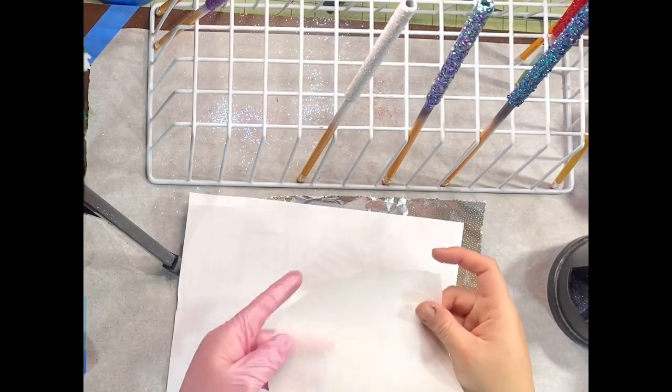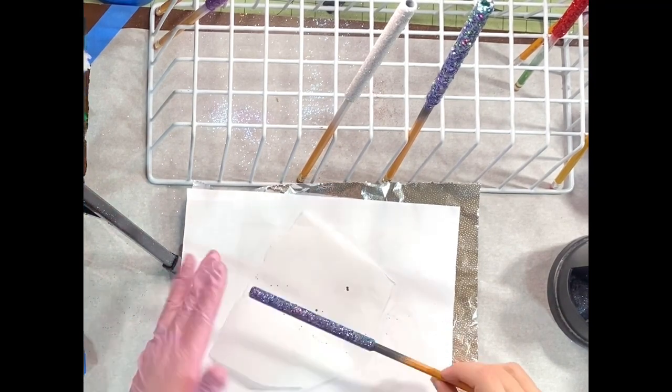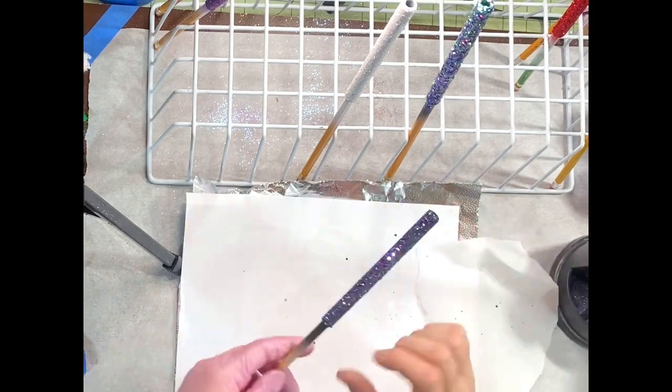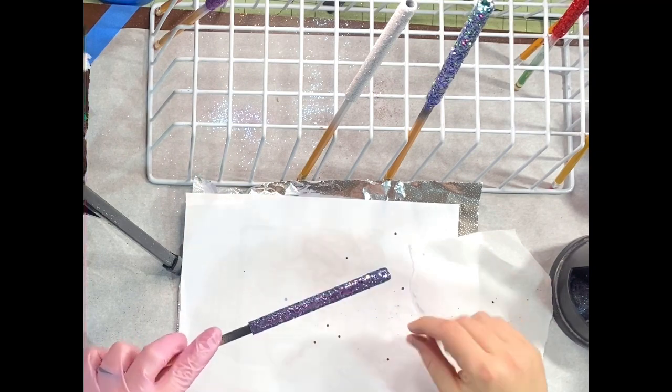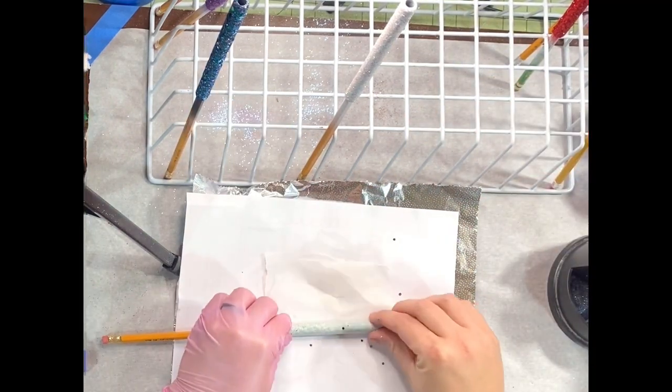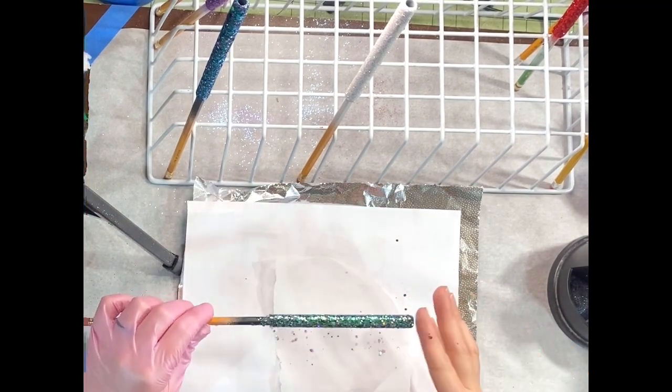Then once you're done glittering, you're going to take a piece of wax paper and you're going to kind of lay your chunky glitters flat. You can roll it in the wax paper, but do not smudge it or you will move your glitter and you will see your paint. You're just wanting to lay that chunky glitter flat. This is going to help you in the long run to do less coats so it's not super thick.